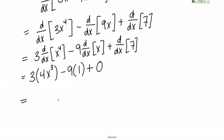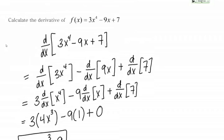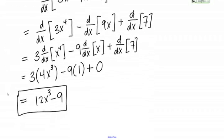If I combine everything together, my final answer then is going to be 12X cubed and then minus 9. The derivative of this function, this polynomial, is 12X cubed minus 9. This is F prime of X.